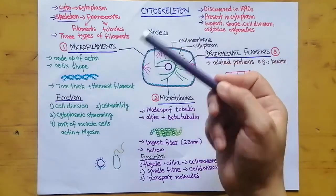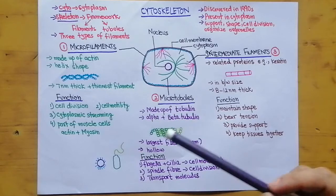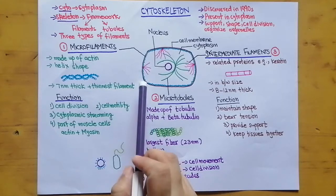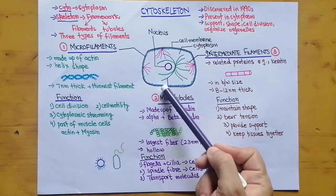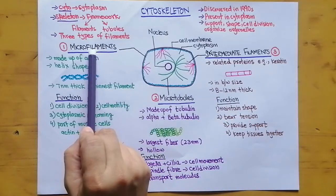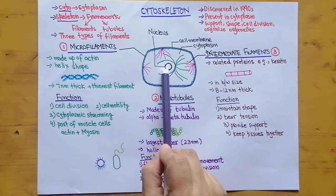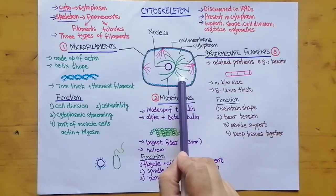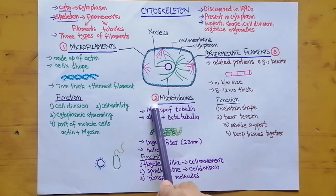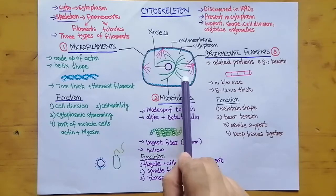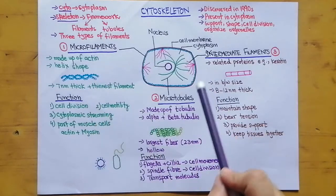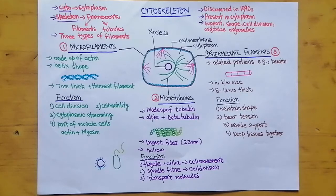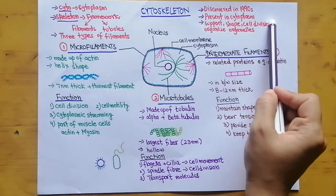In this diagram, I have drawn three different types of filaments. The outer brown layer is the cell membrane. Just next to it, in blue, is the microfilament. The central part is the nucleus, and around the nucleus in green is the second filament — microtubules. The third filament, in pink, is the intermediate filament. Together, these three filaments form the cytoskeleton.